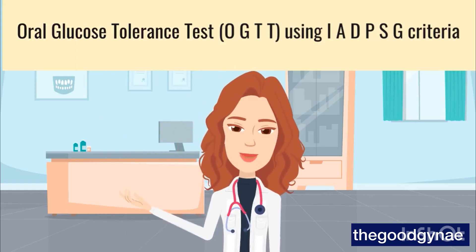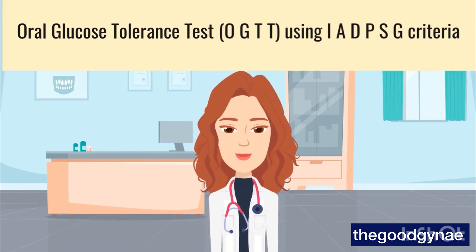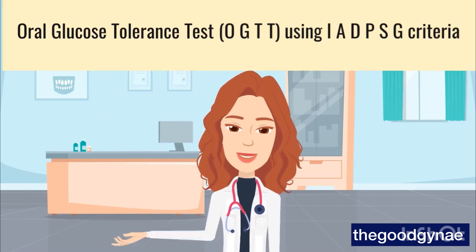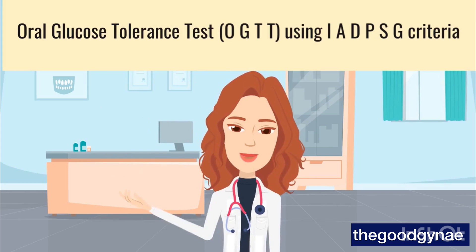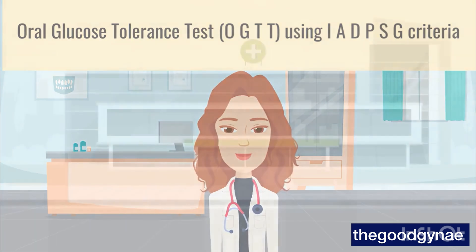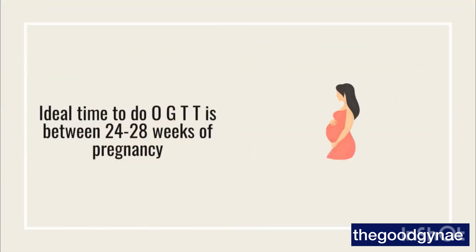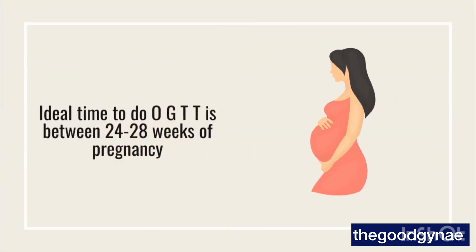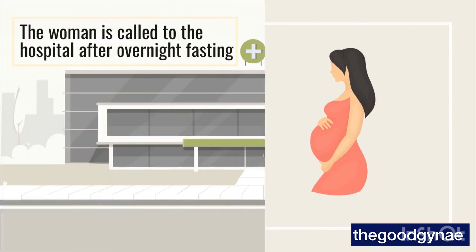Oral Glucose Tolerance Test, OGTT, using IADPSG Criteria. The ideal time to do OGTT is between 24 to 28 weeks of pregnancy.